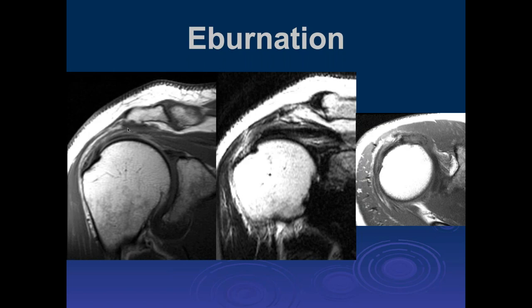Over time, you can get irregular osteophytes involving the cortical bone of the inferior acromion surface, often with bony thickening or eburnation. This likely indicates abnormal rubbing of tissues, producing a bony reaction. This is commonly associated with irregularity of the superior supraspinatus tendon margin and may cause partial bursal-side tears of the supraspinatus.